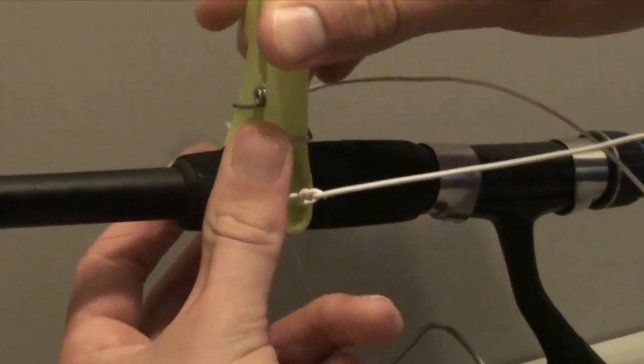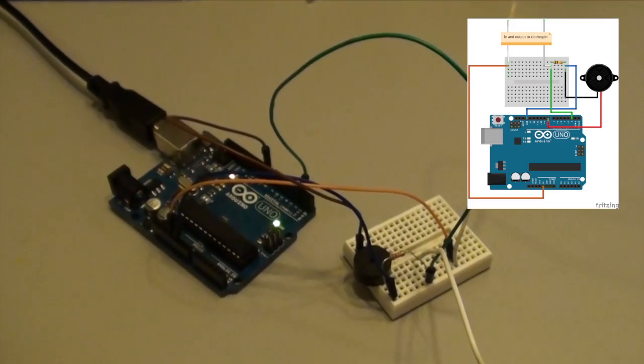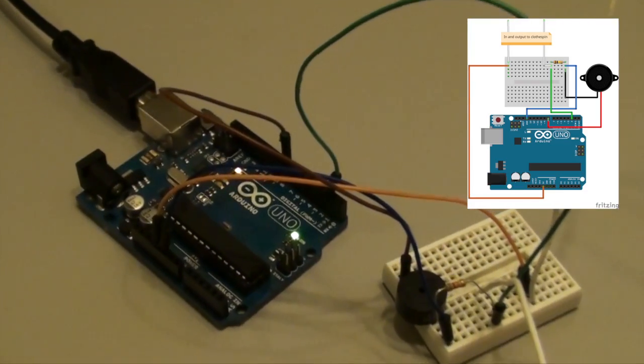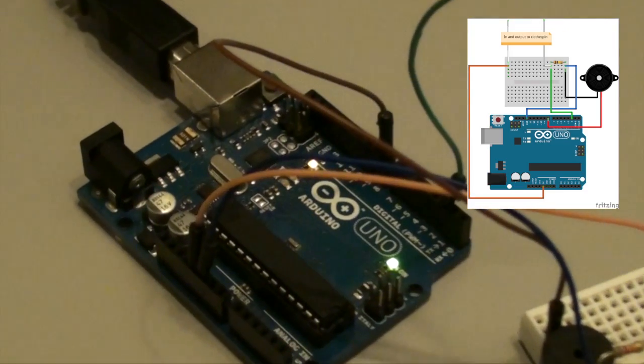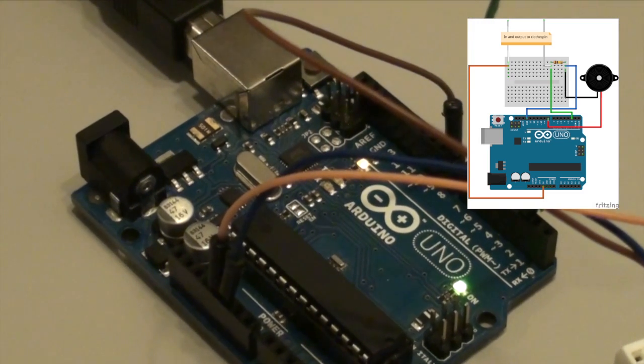Attach the foil and the clothespin to the rod. Create a circuit with both the Arduino and the wires of the clothespin. Hook the Arduino up to a 5-volt power supply.